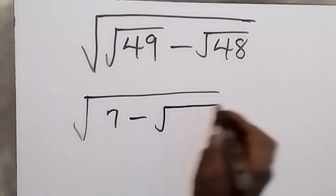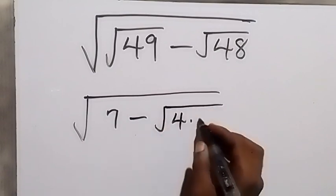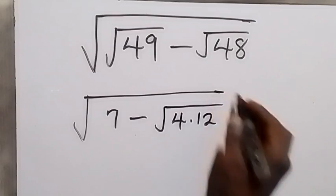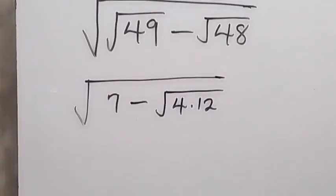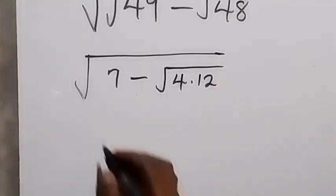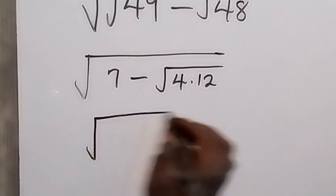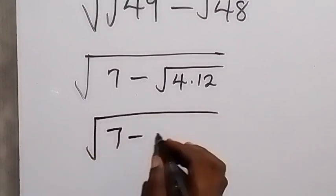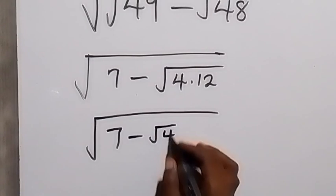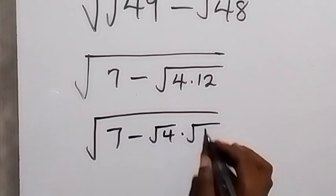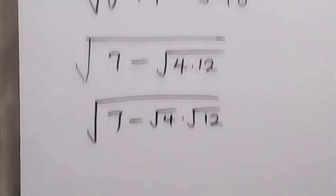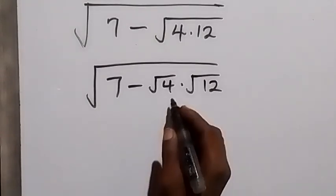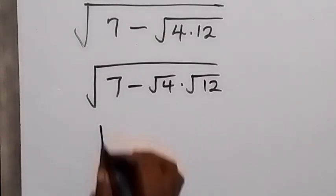We break down 48 into 4 times 12, which we can write as √(7 - √4 × √12). From here, √4 is 2, so we can write this again as square root of 7 minus 2 times root 12.